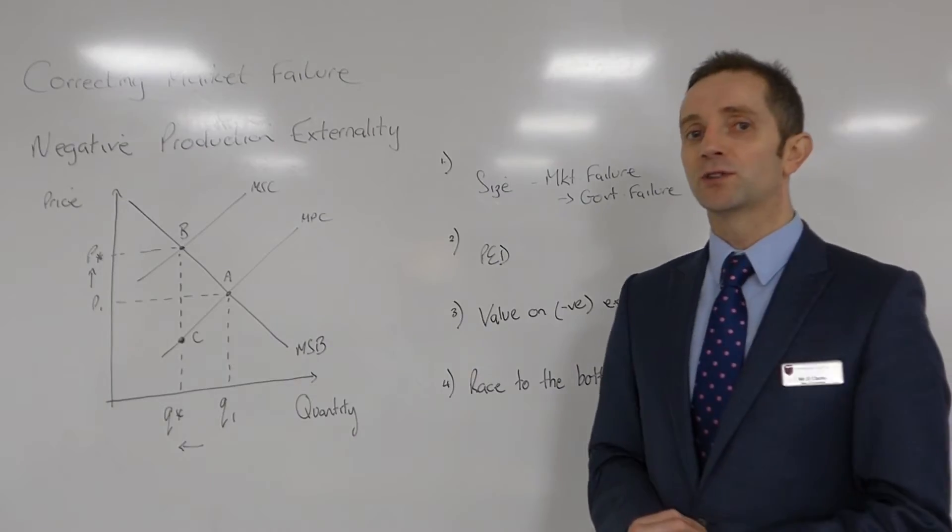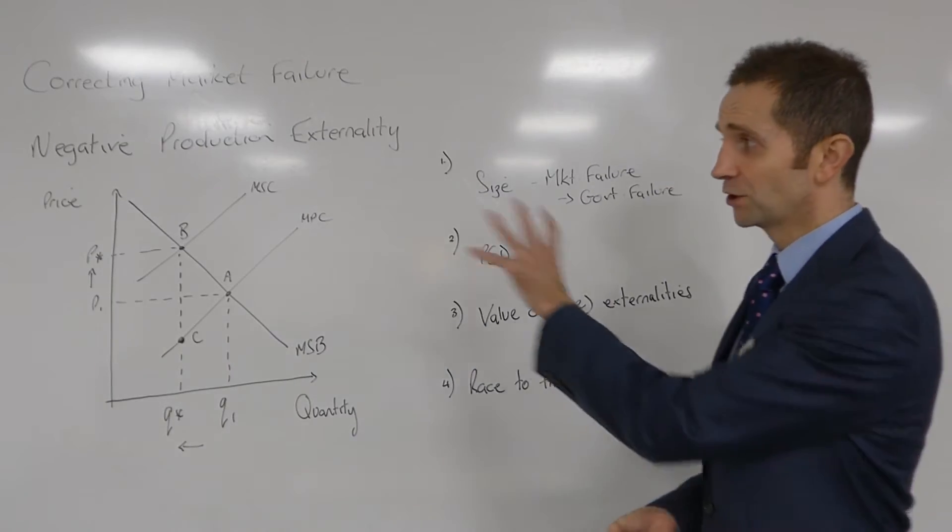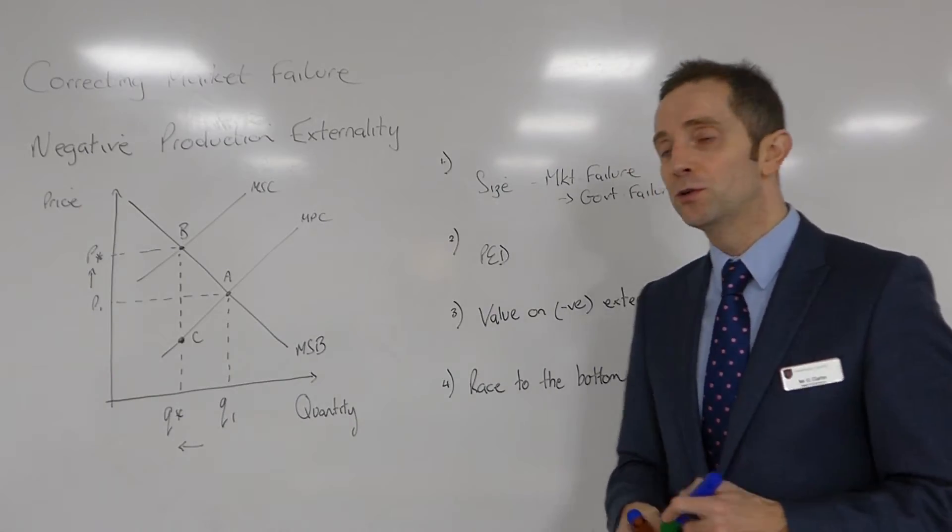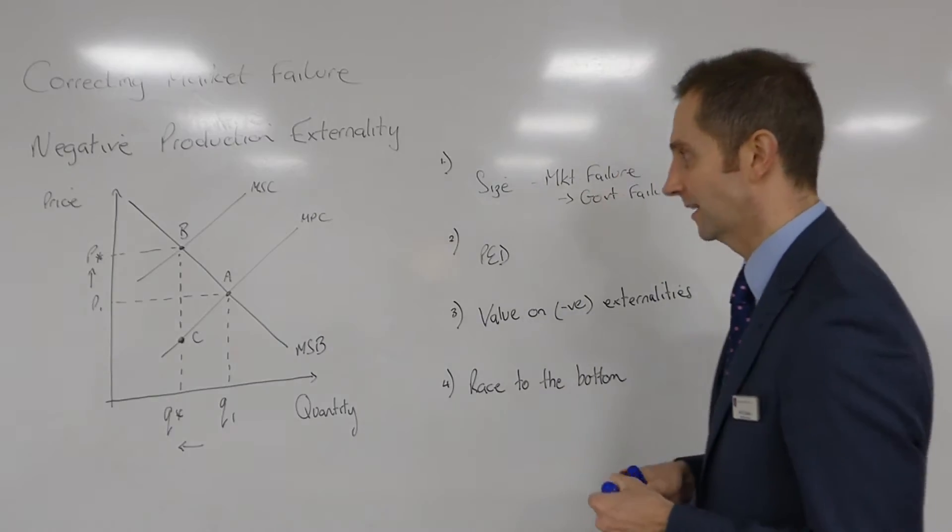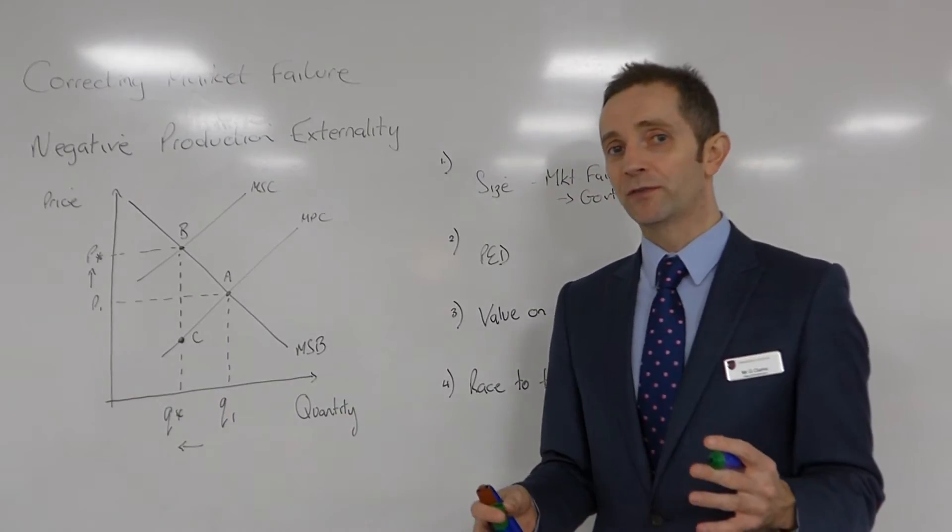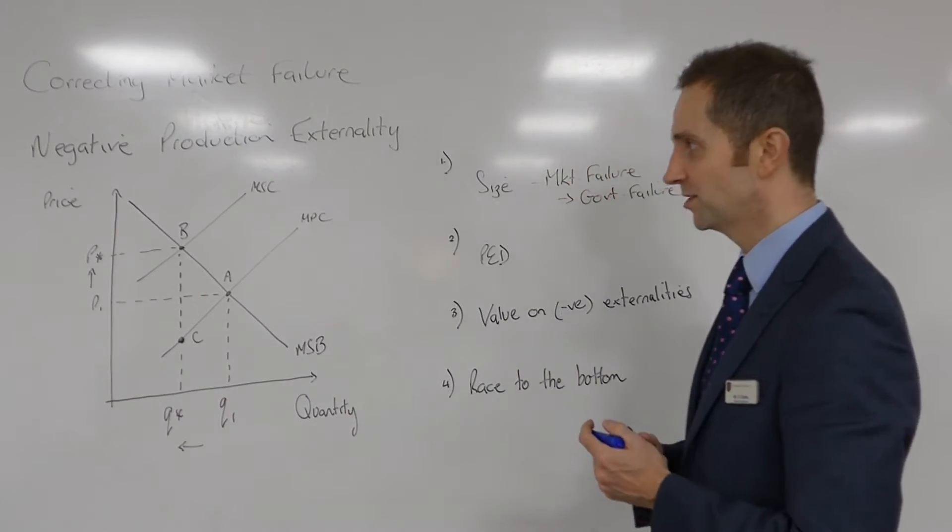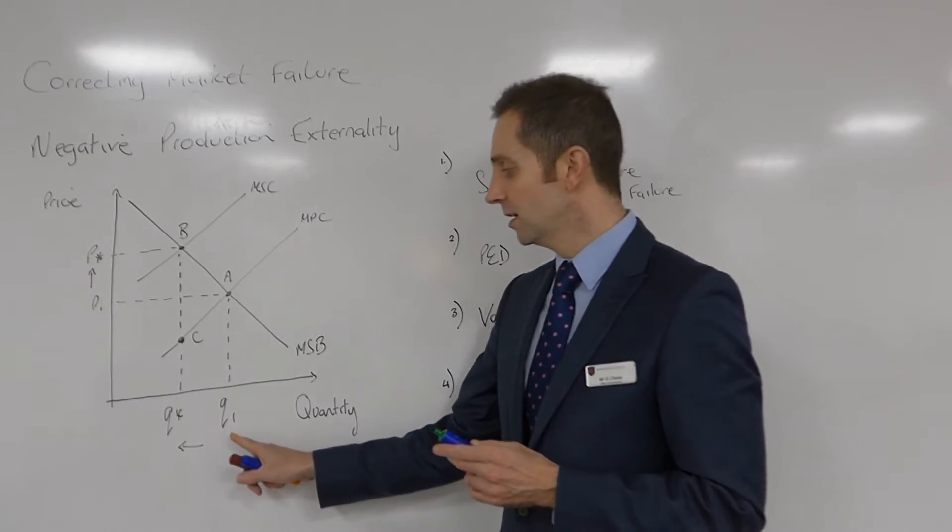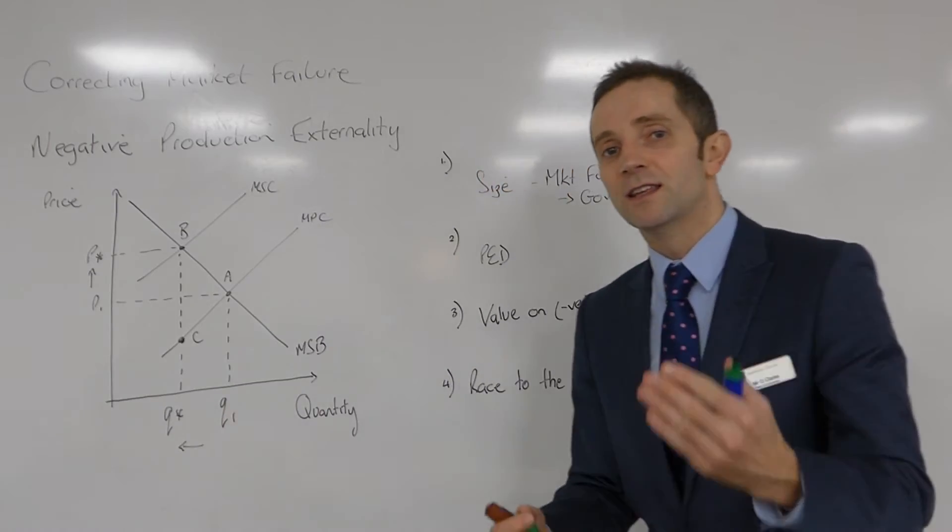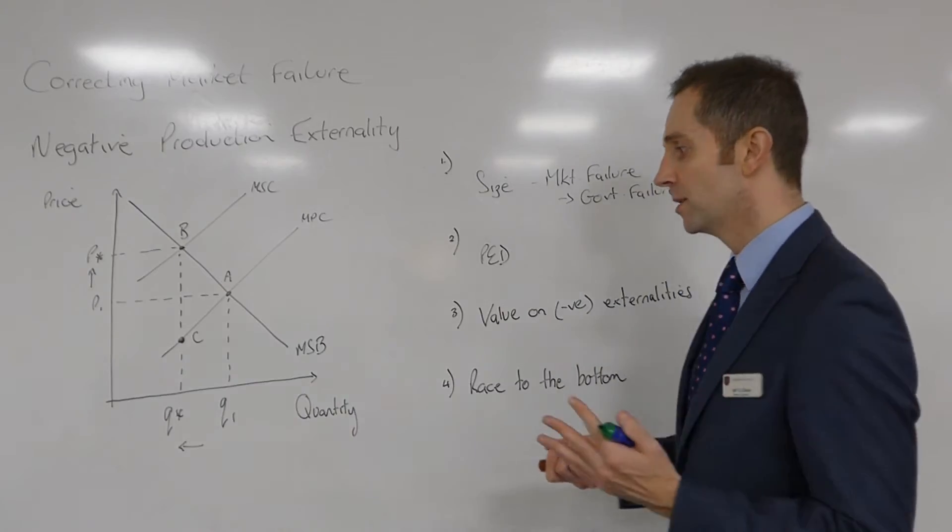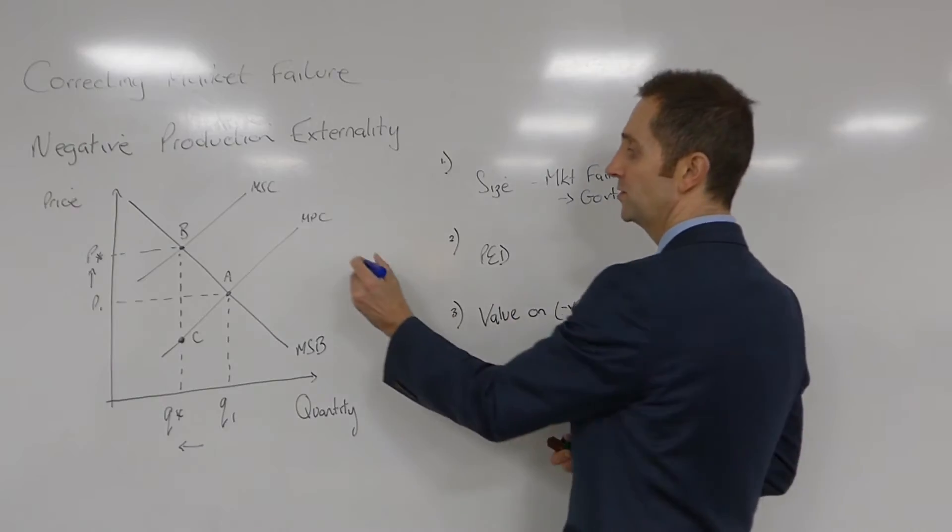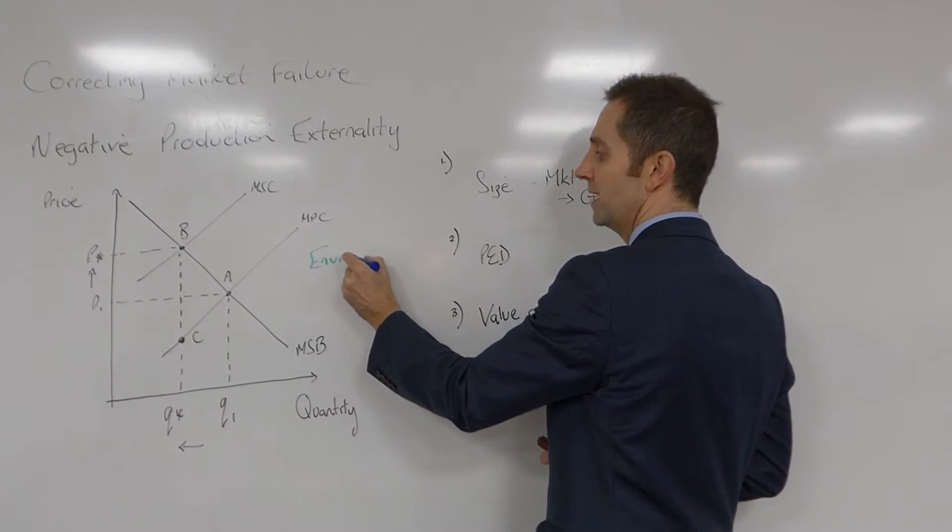Now we're going to look at the possibility of curing a negative externality such as this by introducing what we refer to as an environmental tax. We're going to tax the firm a sum which is equivalent to the damage they're causing to society, thereby reducing the level of output from Q1 to Q star. As you know, Q star is the socially optimum level, or as we economists like to call it, the allocatively efficient level.